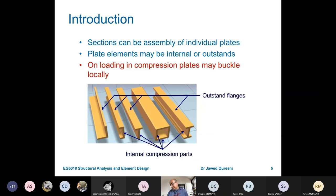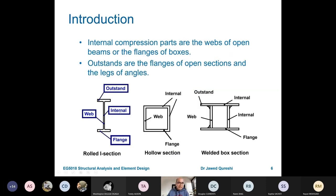Euro Code is a little unusual in its terminology — they changed the names of web and flanges. In Euro Code classification, the flanges are termed as outstand flanges, and the web is termed as internal compression part. Any section is made up of individual plates. For example, an I-section is made up of top flange, bottom flange, and web. A tube section is made up of flanges and web. A built-up section is made up of web and top and bottom flanges.